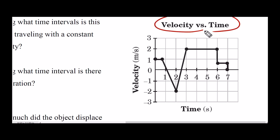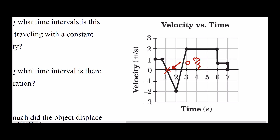Remember, this is a velocity versus time graph, and anytime we have a slope — whether positive or negative — for a velocity versus time graph, this implies some form of acceleration. In this region, we originally were going at one meter per second, but as time went on, this velocity got less and less. It was at one, then maybe 0.75, then 0.5, and then we hit zero meters per second. Conceptually, we began at one meter per second and over time it got slower to the point where it became zero and we stopped. Because we got slower during this region, this is deceleration.